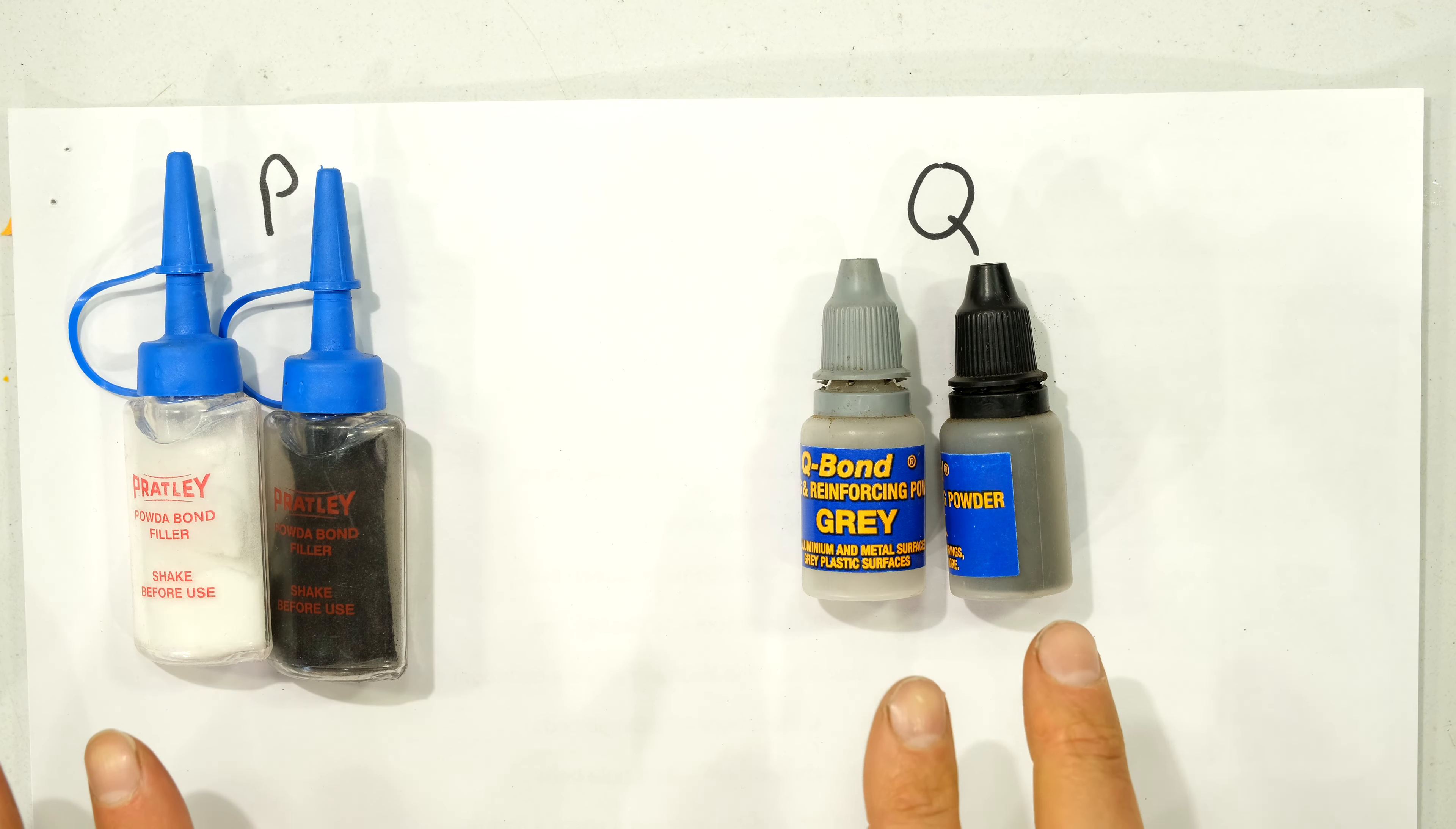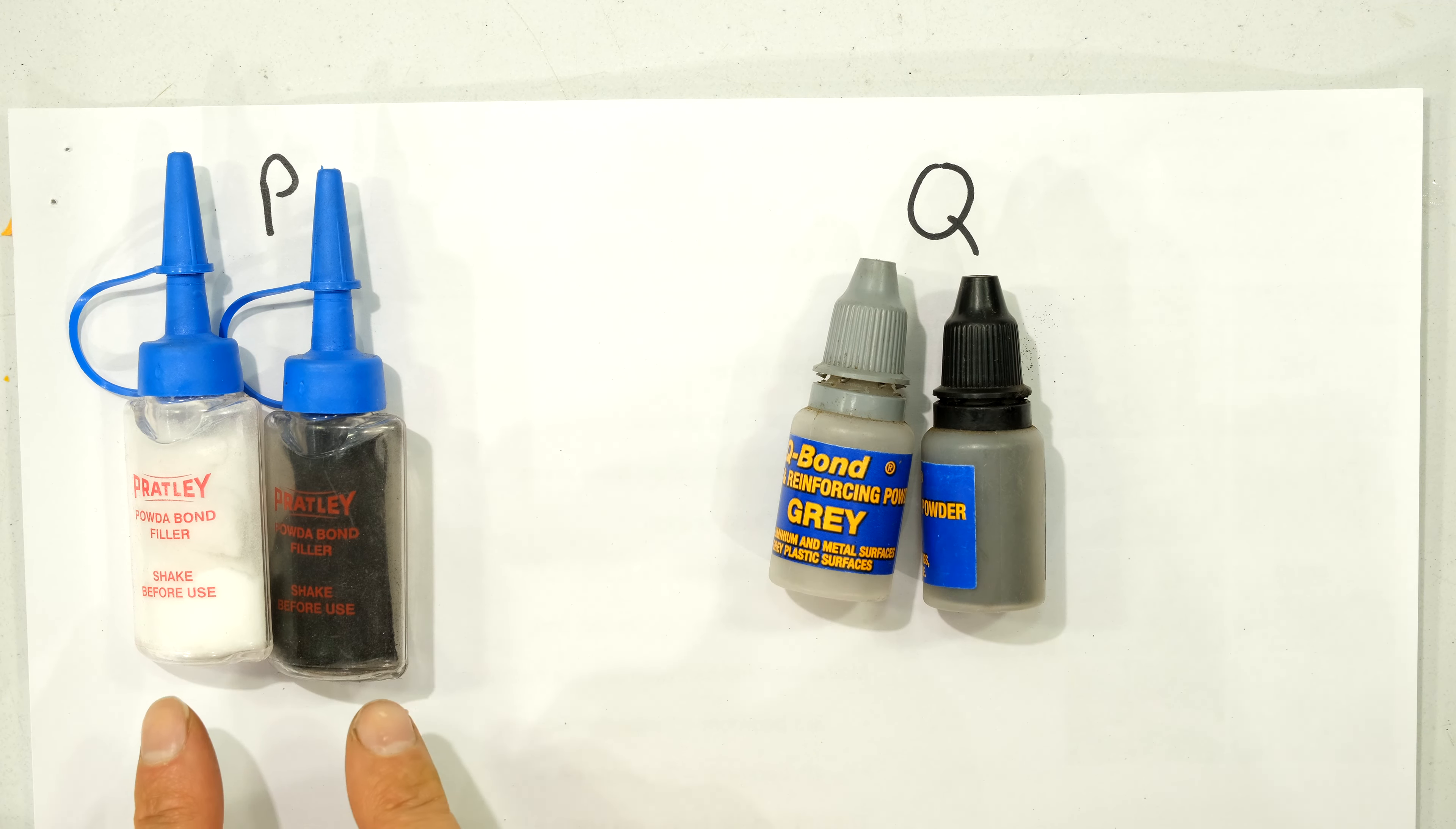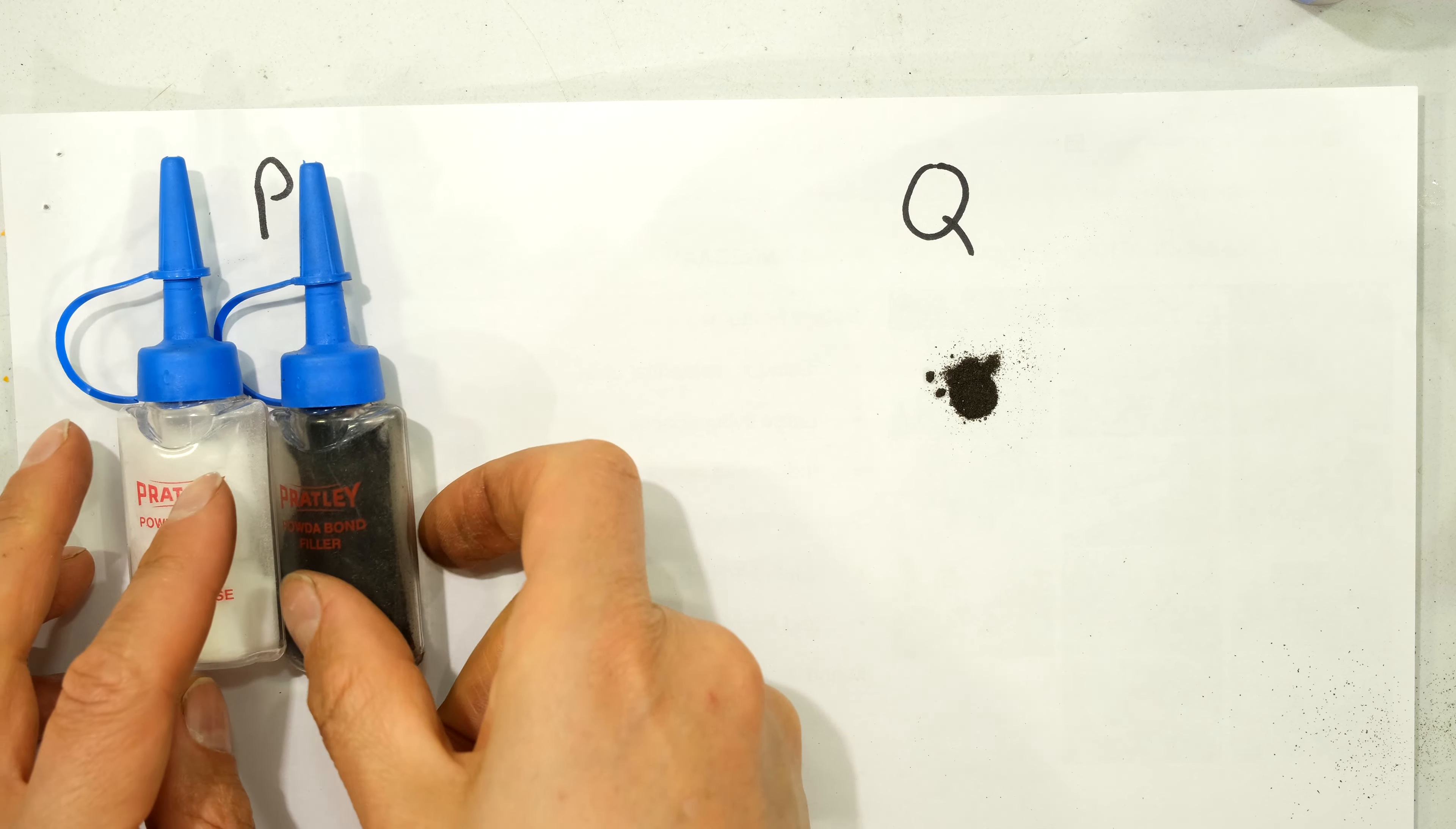Both come with two containers containing filings. Now on the Q Bond side you can see there's a light grey and then a dark grey. And on the Pratley side we've got white filings and the darker filings, a charcoal colour. Now just showing you how I get the filings out. Now I just tap this like that and you can see there's the filings and I'll show you the Pratley.